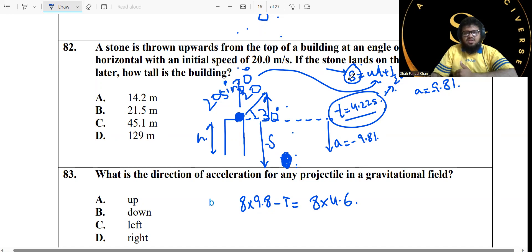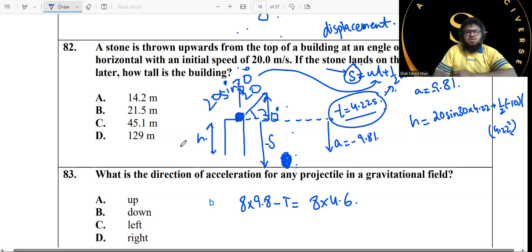If you use the actual sign of acceleration, we had distance to be calculated in that case. Over here we are calculating the displacement in this case. To calculate the displacement, the height is a displacement. You just plug in the values: 20 sine of 30 times 4.22 added to half of negative 10 into 4.22 squared. You calculate, the answer is approximately 44.8 meters. So 44.8 meters is closest to 45, so 45.1 meters is the correct answer.